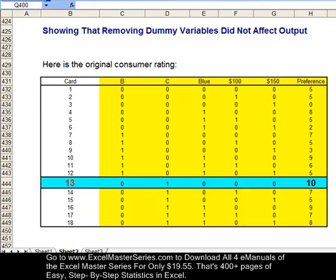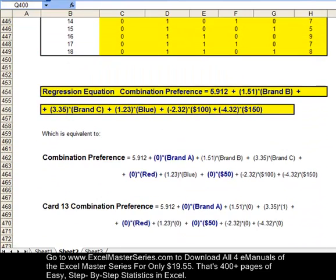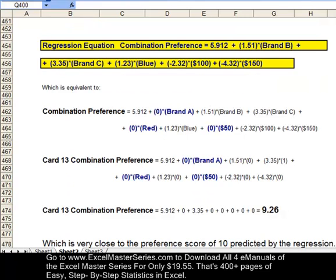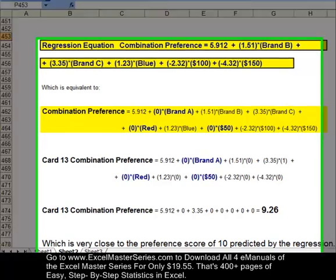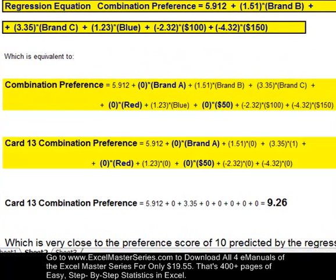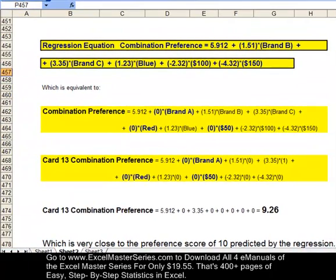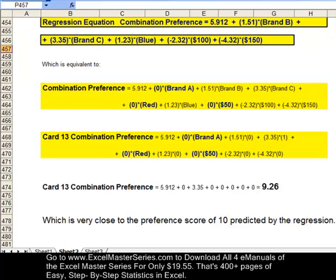So the regression equation is right there. If we put in the dummy variable data into the regression equation for card 13 combination preferences, then add up those scores, we see that gives us a 9.26. Putting the data right into the regression equation, we get 9.26, which is pretty close to the score of 10. So the regression did a pretty good job. We can see that removing those dummy variables did not affect the accuracy or the completeness of the answer.